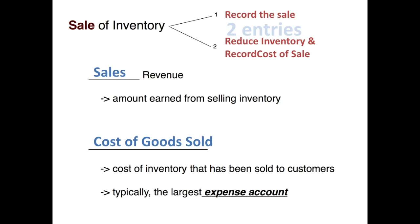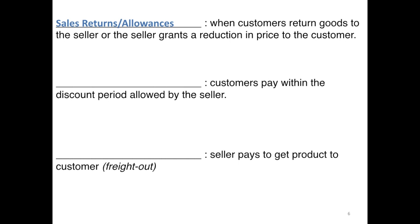Now let's turn our attention to contra sales accounts. The first one is sales returns and allowances. This is when a customer actually returns goods to the seller, or the seller grants a reduction in price to the customer. We call this a contra revenue because it effectively reduces your net sales. You're not going to debit your sales revenue account when someone returns something — you always credit sales revenue. To reduce sales effectively, we debit an account called sales returns and allowances.